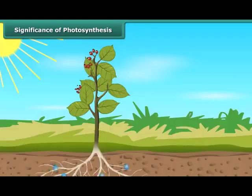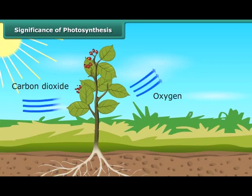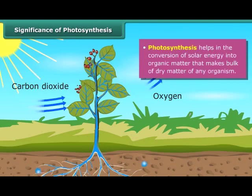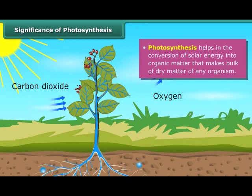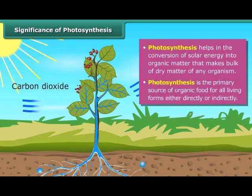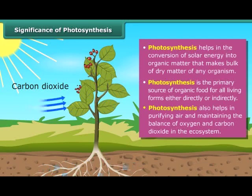Photosynthesis is an important and vital process for life on this planet. This process helps in the conversion of solar energy into organic matter, and hence photosynthesis links the physical and biological world. It is the primary source of organic food for all living forms, either directly or indirectly. It also helps in purifying air and maintaining the balance of oxygen and carbon dioxide in the ecosystem.